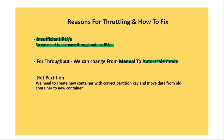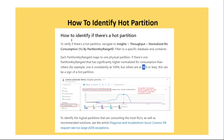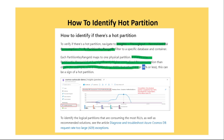Another reason for throttling can be a hot partition. If there is a hot partition, there is no straightforward fix — we need to create a new container with the correct partition key, move data from the old container to the new one, and we can use a tool for this. To identify a hot partition, go to the portal under Insights, under Throughput, and look at normalized RU consumption percent by partition key range ID. If one partition key range ID has significantly higher RU consumption — for example 100% — while others are at 30%, that indicates a hot partition.